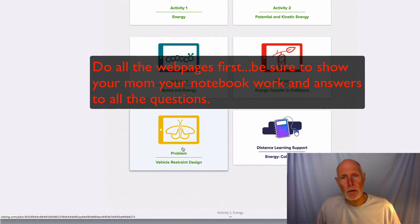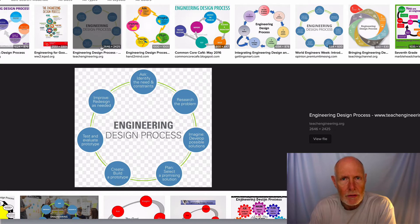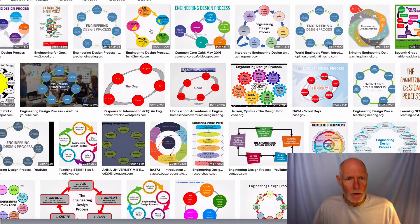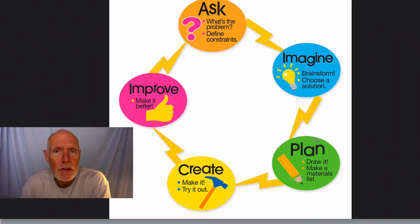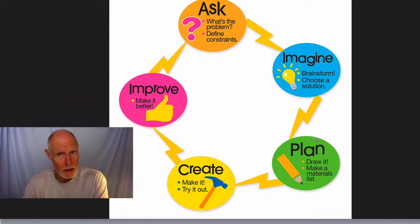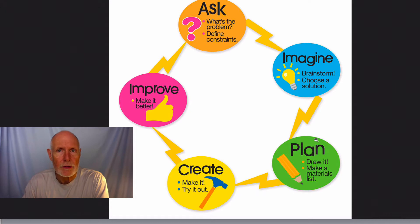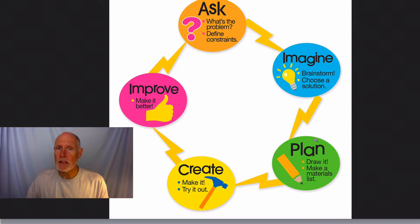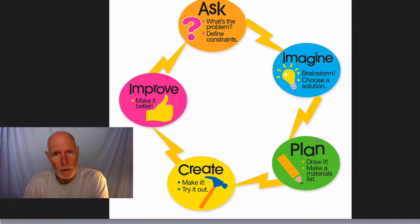I don't know exactly which engineering design process diagram Mrs. O'Shea is using, but it's going to look a lot like one of these. The engineering design process has a couple of steps — in this case there are five. We start at the top: ask ourselves a question — what is the problem? Then define constraints. Constraints are things that limit our ability to do anything we want — like size, money, materials, temperature, or light.